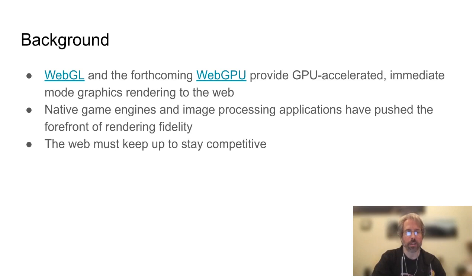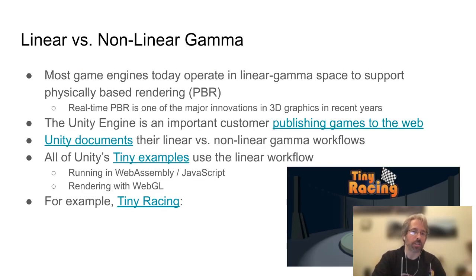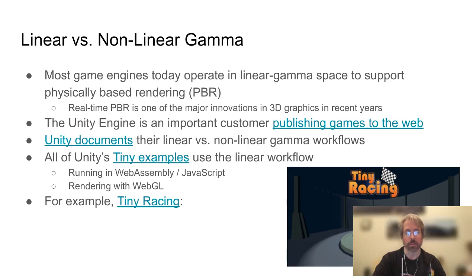For a little bit of background, the WebGL and forthcoming WebGPU APIs both provide GPU-accelerated immediate mode graphics rendering to the Web. Native game engines and image processing applications have pushed the forefront of rendering fidelity, and the Web must keep up in order to stay competitive. Most game engines today operate in a linear gamut space to support physically based rendering, or PBR. Real-time PBR is one of the major innovations in 3D graphics in recent years. The Unity engine is an important customer publishing games to the Web, and Unity documents their linear versus nonlinear gamma workflows. All of Unity's tiny examples use the linear workflow, running in WebAssembly and JavaScript with WebGL rendering. For example, you can look at the Tiny Racing mini game to get a feel for their rendering quality.